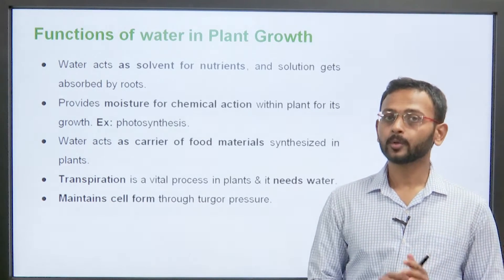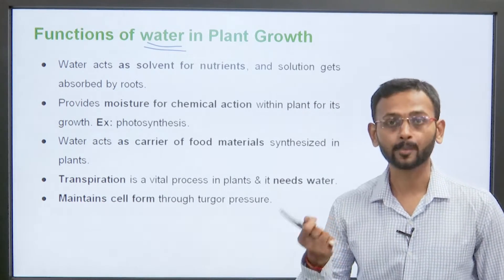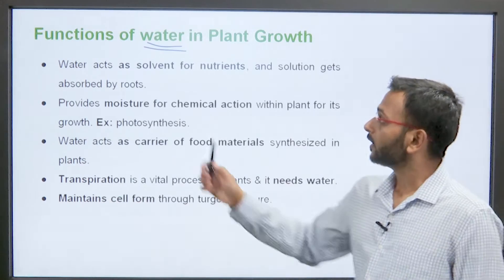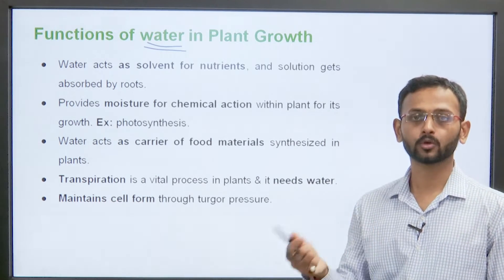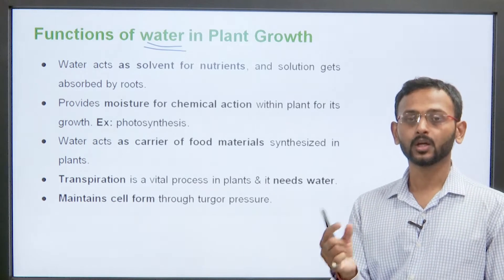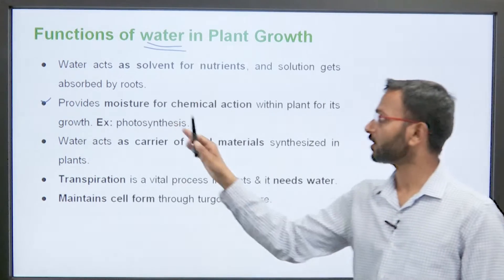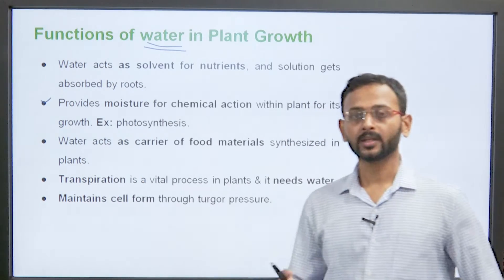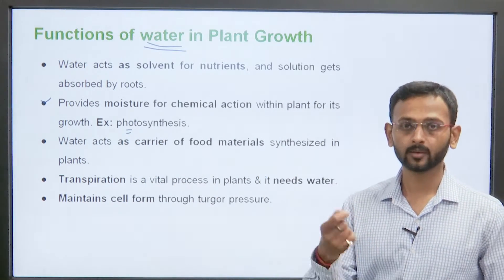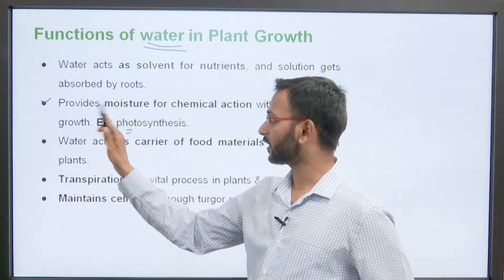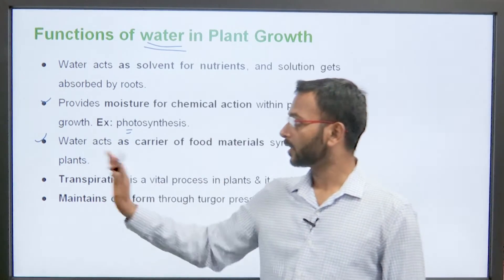Now we will be talking about the water which is being used for the plant growth. Water are the functions of water. Water ka kam kya hai plant growth me, kaise help karta hai. First point, water acts as a solvent for the nutrients and the solution gets absorbed by the roots. Ap directly a fertilizer ndalenge toh woh absorbed nahi ho paega. But agar water ke saath me laaya gaya toh wo diluted form me rahega and it can be easily absorbed by the plant. Next point is it provides the moisture for the chemical action within the plant for its growth. Aap janatay hai photosynthesis ke baare mein. Toh photosynthesis me water ka requirement hai. The plant will take in the water aur uski wae se wo apna food manufacture karega.